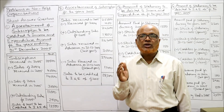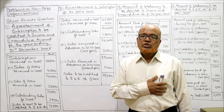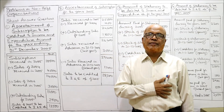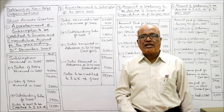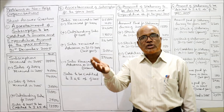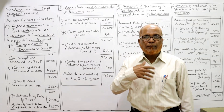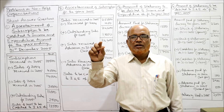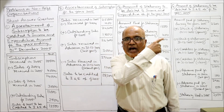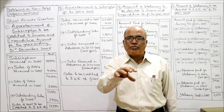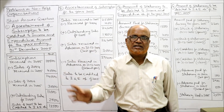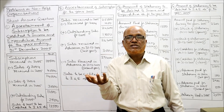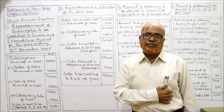We have to find how much subscription to be credited to the income and expenditure account for the year ending 31st December 2005. While preparing the income and expenditure account, we take into account only the current year's income. Last year's income and next year's income we remove. If current year's income is outstanding, we add it. We take subscription received, deduct last year's subscription received in current year, and deduct next year's subscription received in advance.